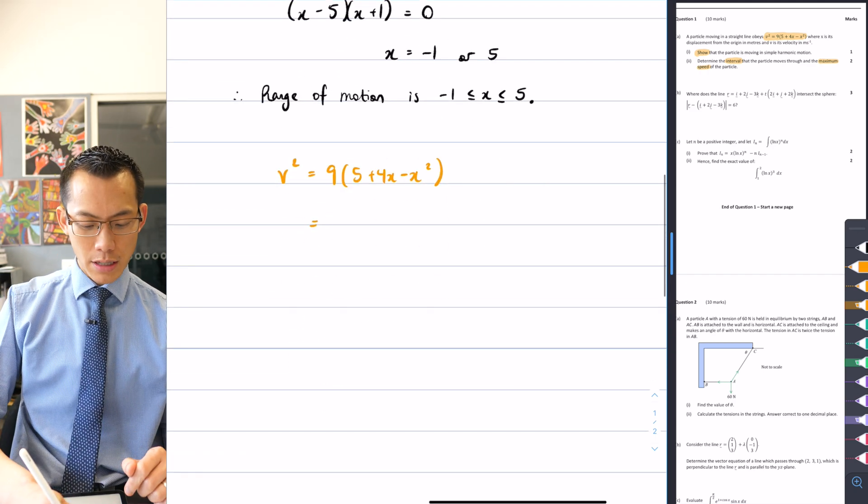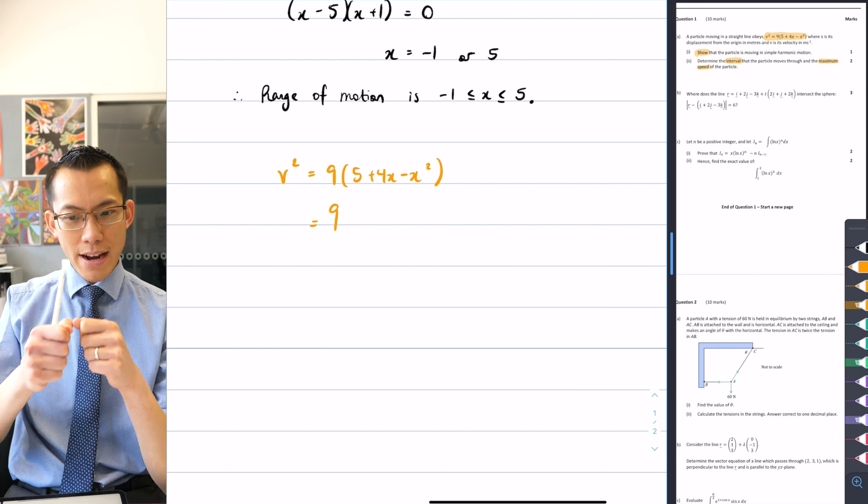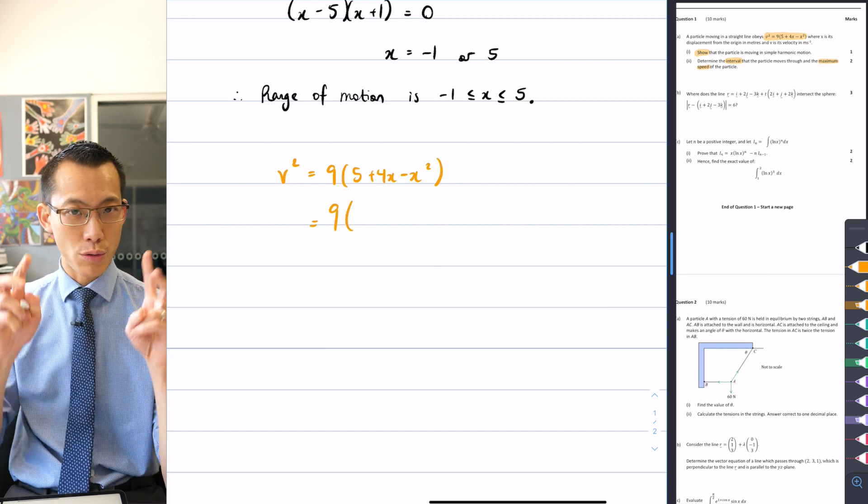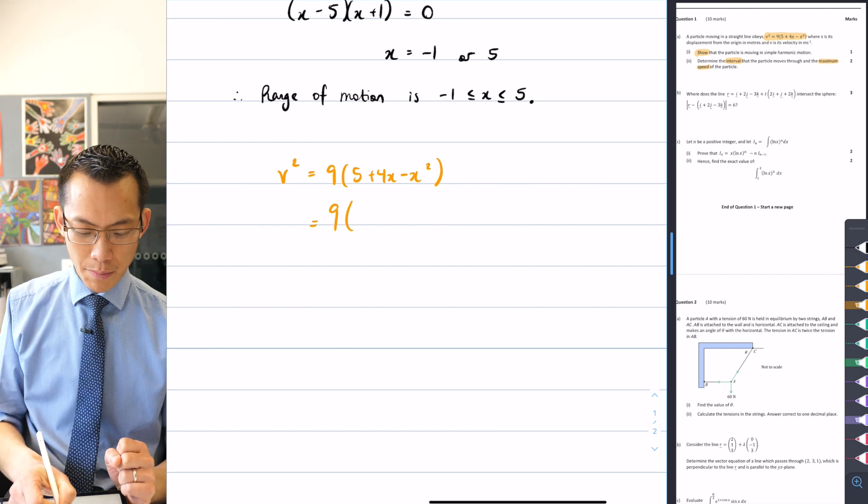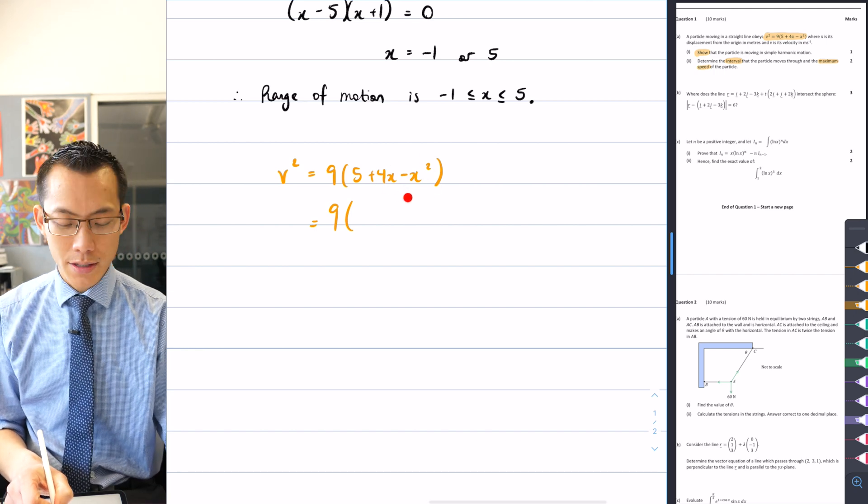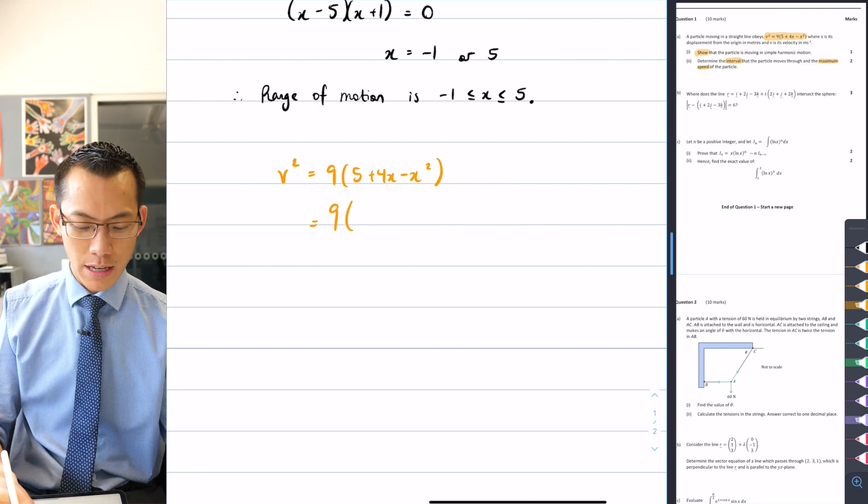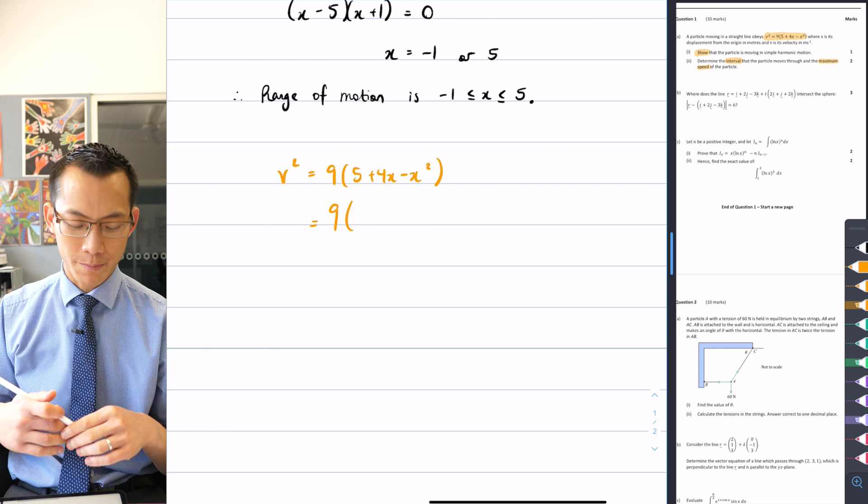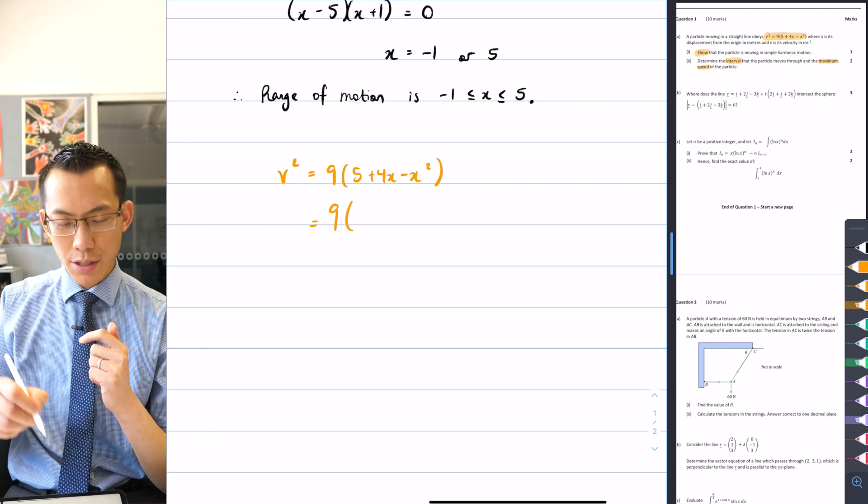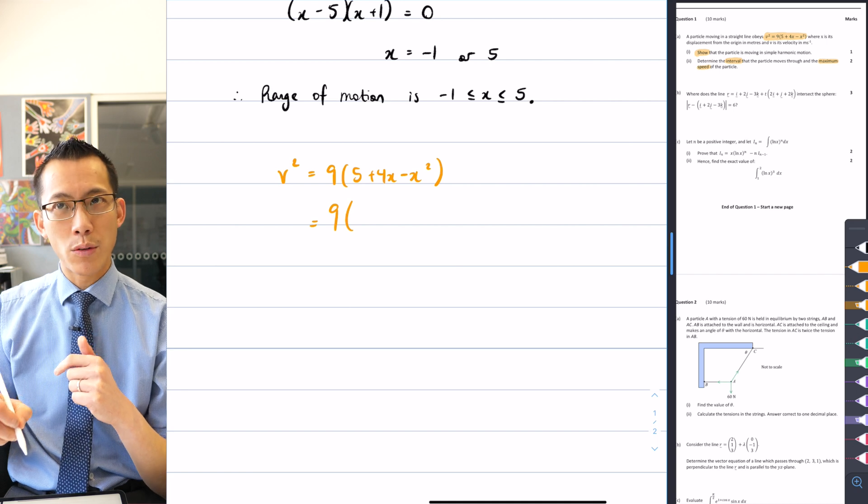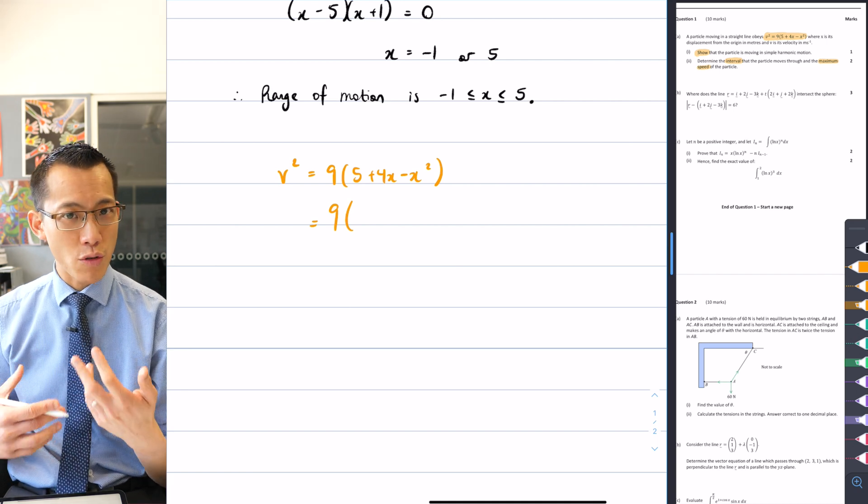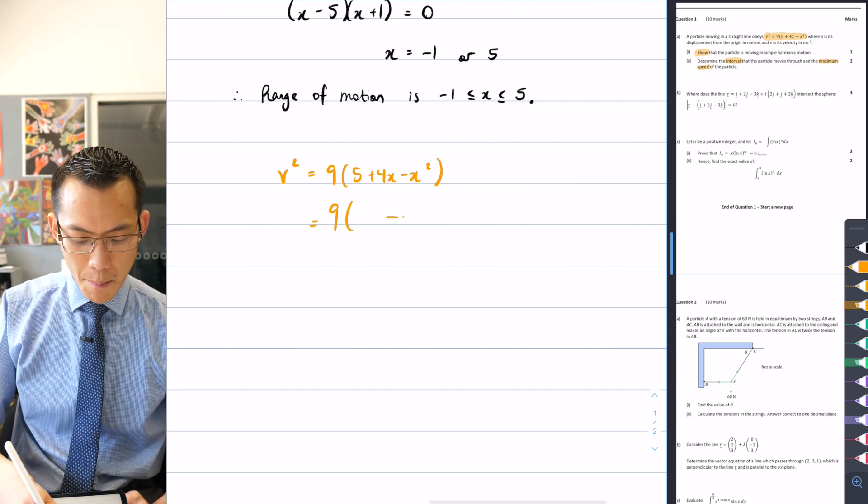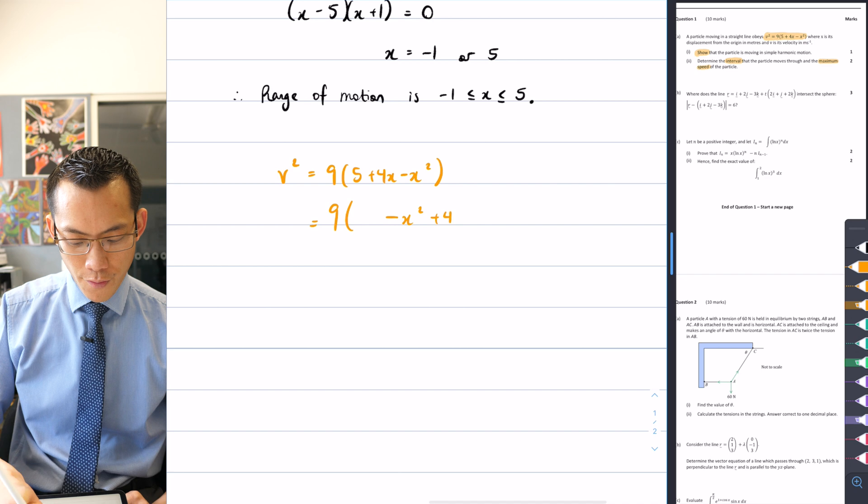Some of you may remember that I can do some factorizing and some completing the square here to make obvious what's going on here with the motion without actually having this knowledge that at the extremities the particle is stationary. So what I can do here is inside the brackets, I'm going to break apart the five into two different numbers that allow me to complete the square. 4x minus x squared, what do I need to add or subtract to that in order to complete the square?